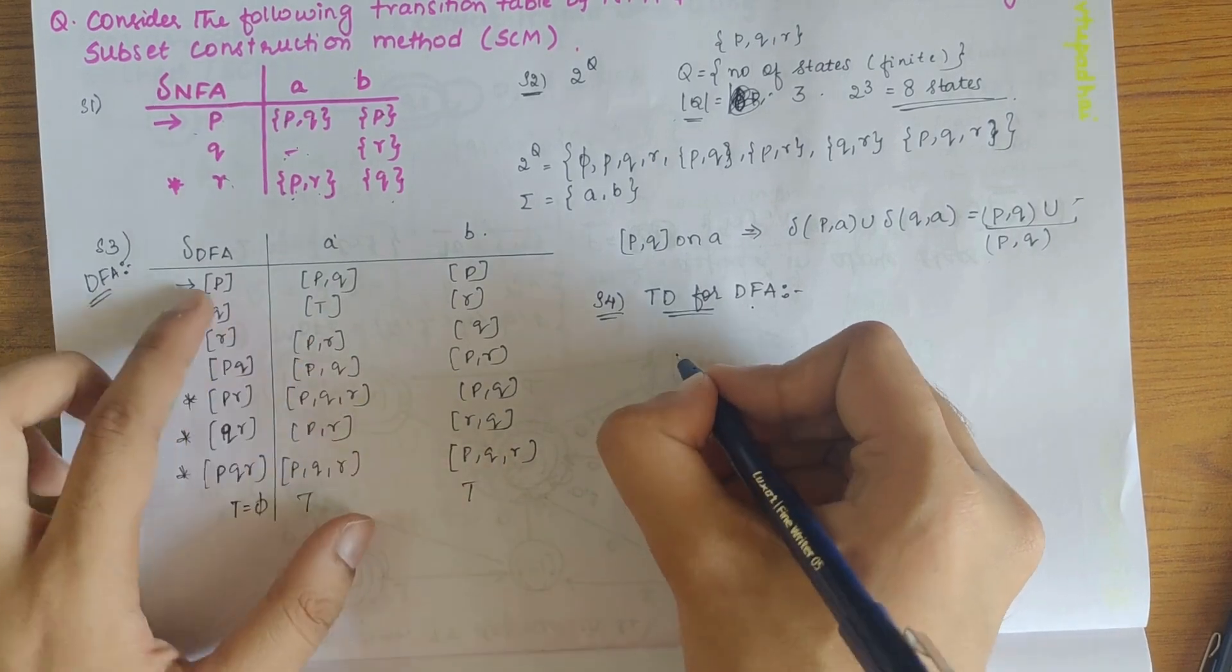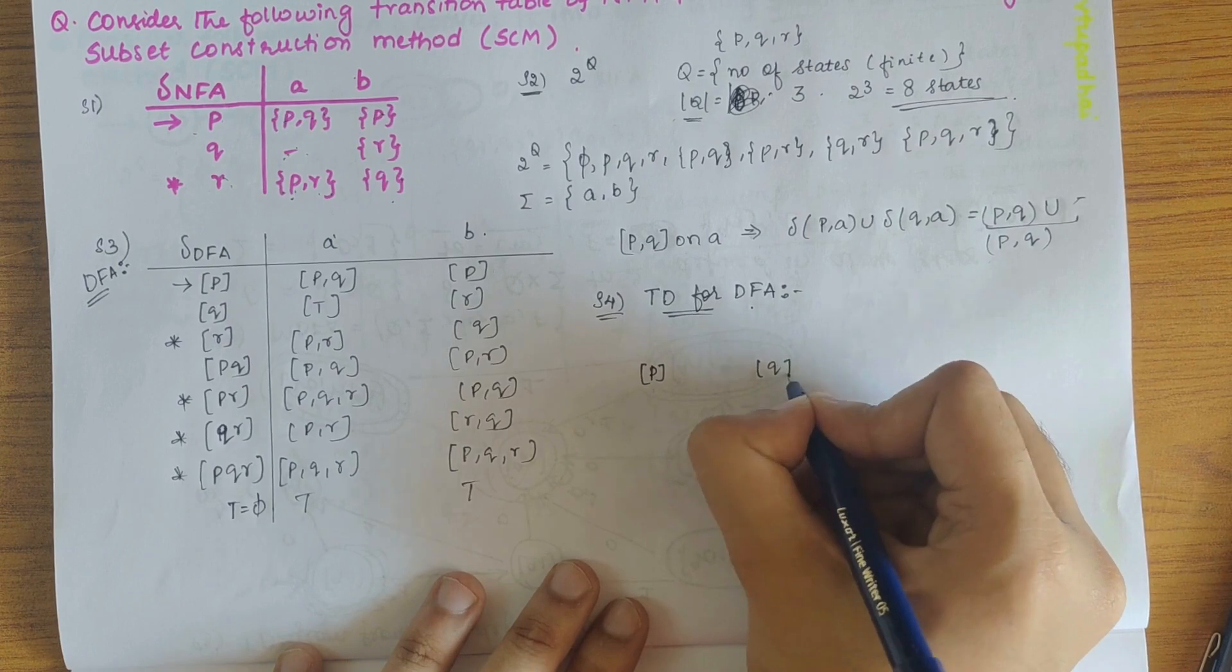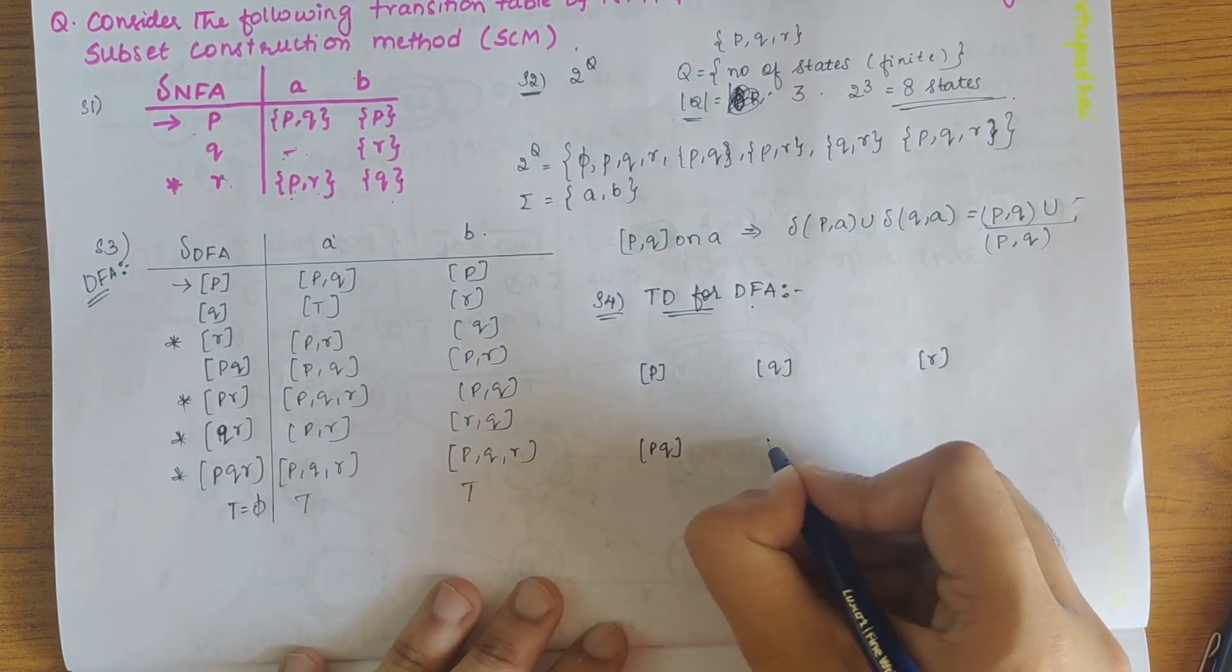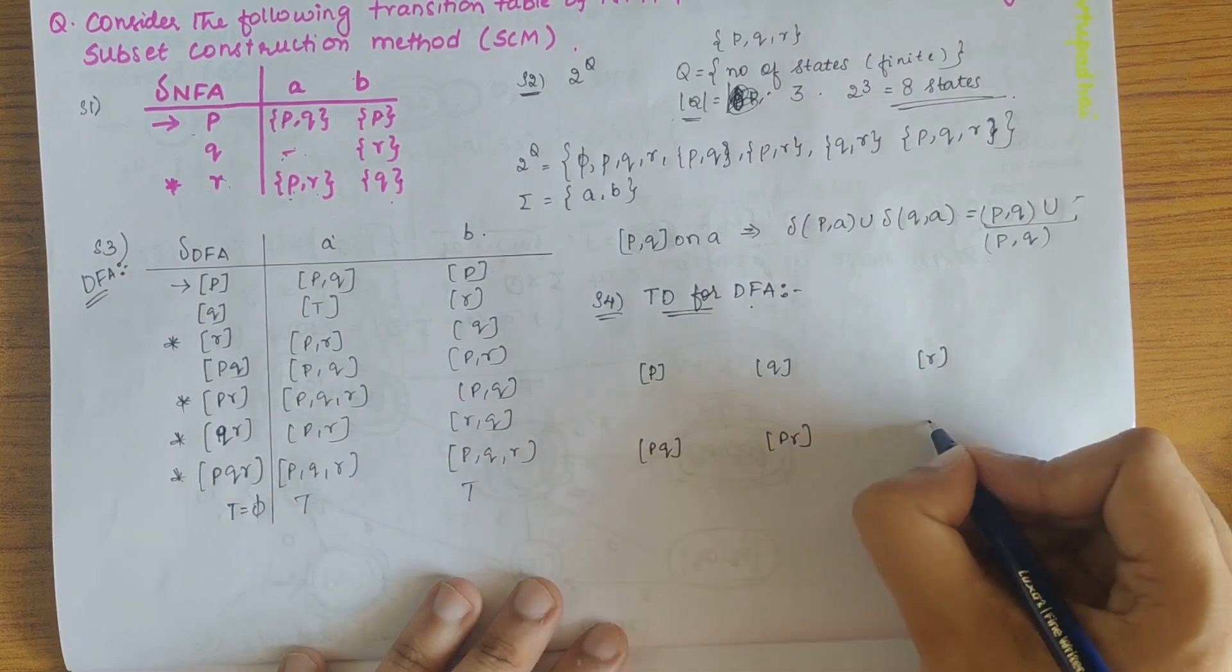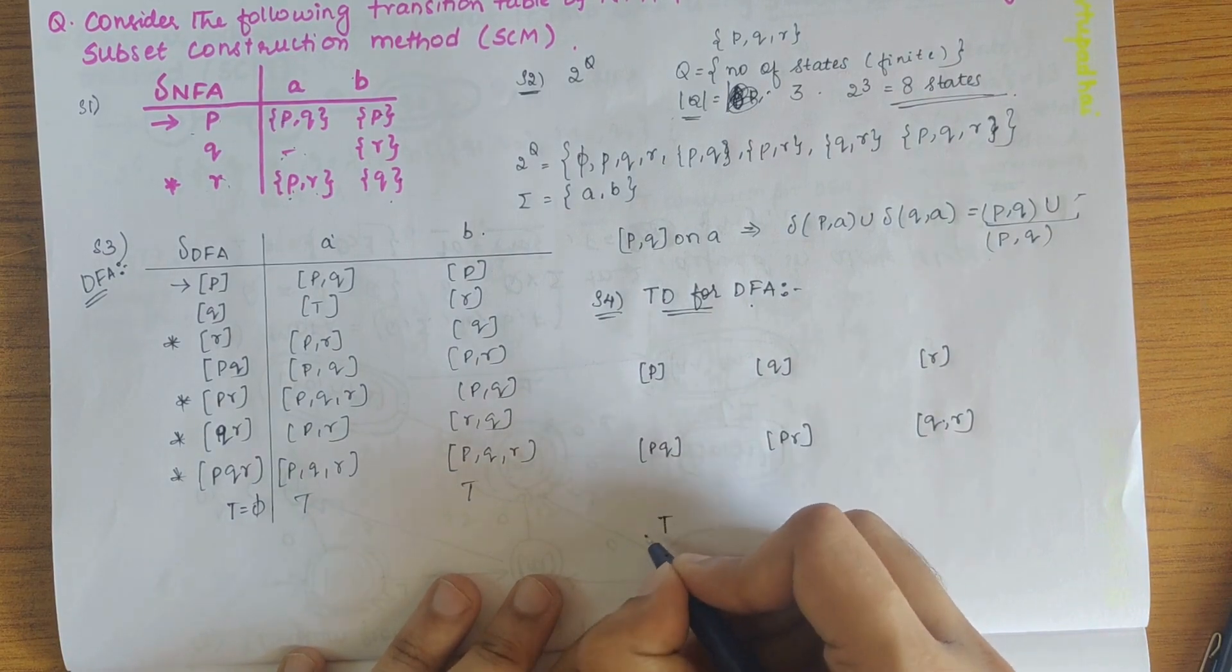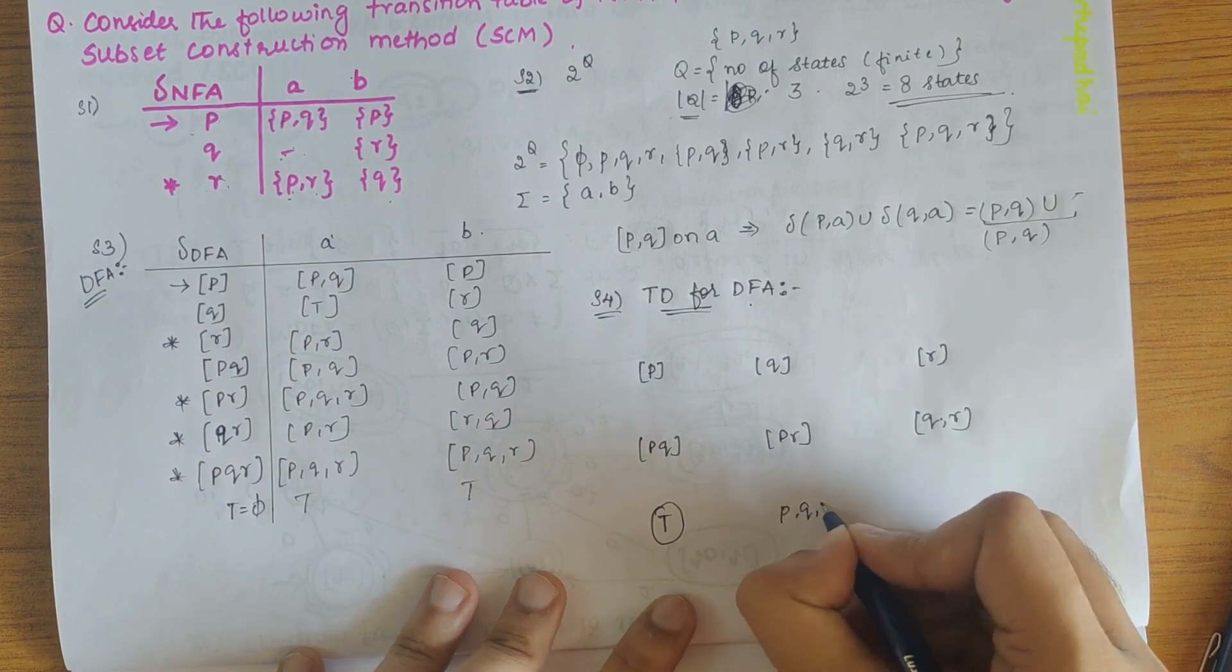So let's draw the transition diagram. These are all the states, let's represent it one by one. p, q and r, here let's write pq, pr and qr. And here let's define the trap state and here pqr.